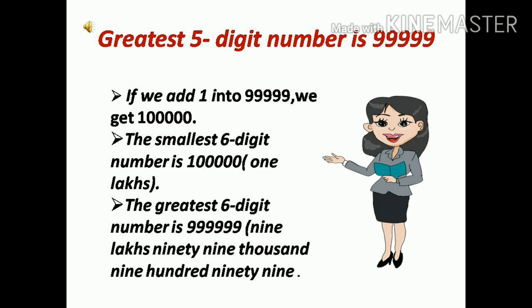We have already learned that 10,000 is the smallest 5-digit number and 99,999 is the greatest 5-digit number. Now, let us see what comes just after 99,999. For this, let's add 1 to 99,999. By adding 1, we will get 1 lakh. 1 lakh is the smallest 6-digit number, and the greatest 6-digit number is 9,99,999.